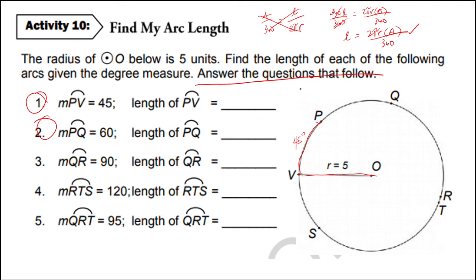So we have the arc length for number 1. So the arc length for number 1 is equal to 2 pi r times the radius which is 5, times the degree measure which is 45, over 360. And we can simplify this. 45 divided by 45 is 1. 360 divided by 45 is 8. So we will now have 2 times 5 is 10. So 10 pi over 8. And 10 pi is approximately 31.416 over 8.